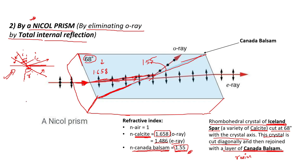The condition is that the incident ray must be more than the critical angle. The Nicol Prism is positioned in such a way that the O-ray will strike the Canada Balsam at an angle greater than the critical angle. So it will always strike it at an angle greater than the critical angle, suffer total internal reflection, and be eliminated from the sides of the Nicol Prism.